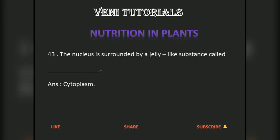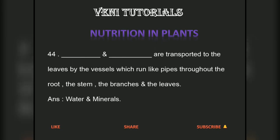The nucleus is surrounded by a jelly-like substance called cytoplasm. Water and minerals are transported to the leaves by the vessels which run like pipes throughout the root, the stem, the branches and the leaves.